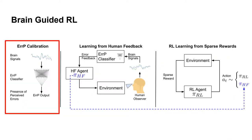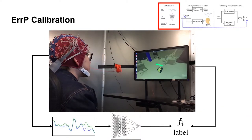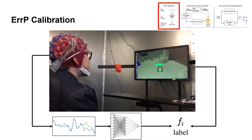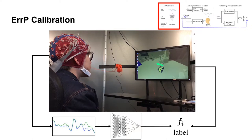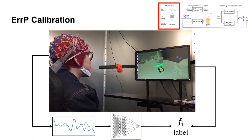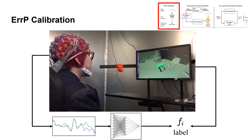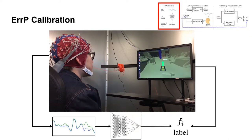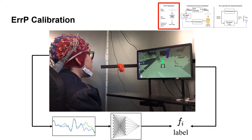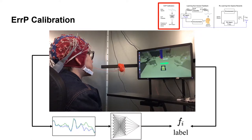First, we train a classifier to detect evaluative feedback from EEG data. In this calibration stage, we record EEG data as the human subject watches a robot act with a random policy. The optimal action is simultaneously shown so that the subject can easily judge each move. A response is evoked in the brain when the agent makes a wrong move. Using the recorded EEG signal and the agent's action, we learn a classifier that can detect wrong moves from the human's EEG data in the form of Error-Related Potential.